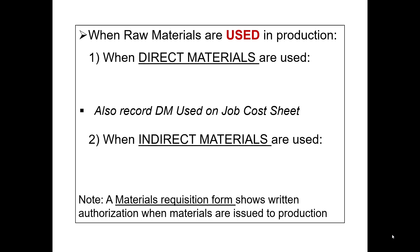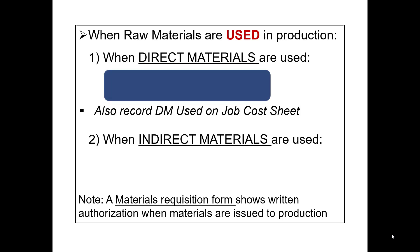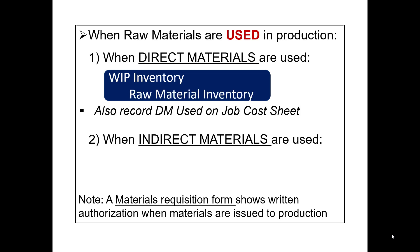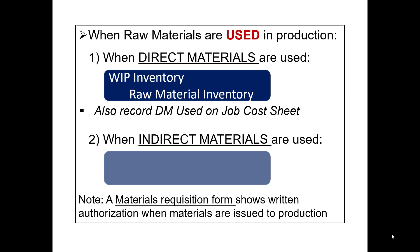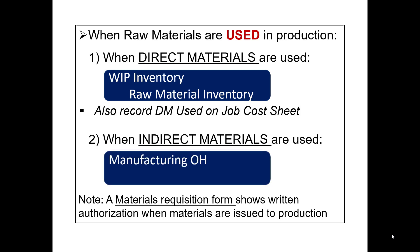When raw materials are used, you must discern whether this is a direct material or an indirect material. If it is a direct material, you are going to debit work in process inventory and credit raw material inventory. This shows that materials were drawn from the store room and put on the production line. If it is an indirect material, you will debit manufacturing overhead since it is an actual overhead cost, and you will credit raw material inventory.